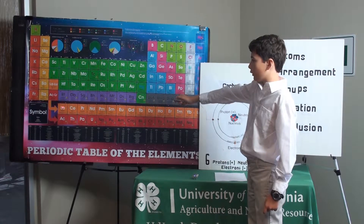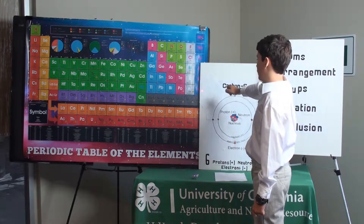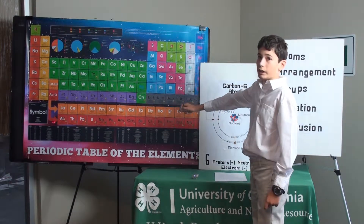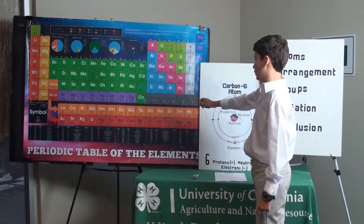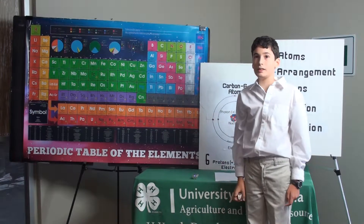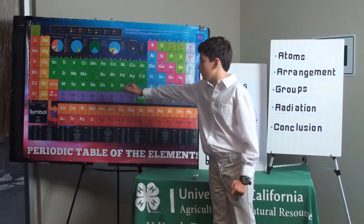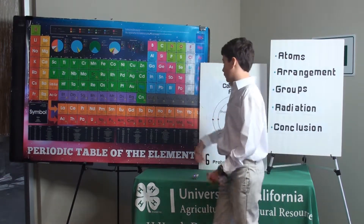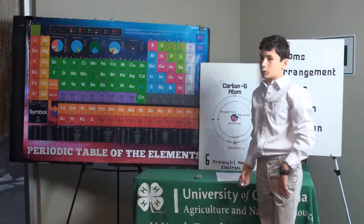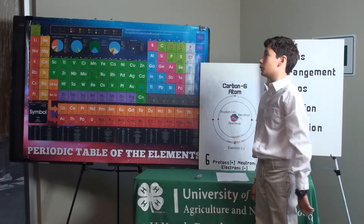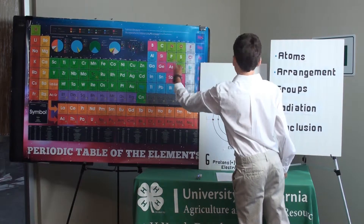Then we jump down here to 57, go all the way to 71, then jump back up to 72 and go to 86, where we go to 88, jump back down again to 89, and then go all the way to 103, then come back up to 104 and go all the way to the last one, 118. The reason why these two groups are way down here instead of where they're supposed to be is because if they were there, the periodic table would be really, really long. And that wouldn't be too fun for nerds like me who have to carry periodic tables around. So that's how the order of the elements goes.